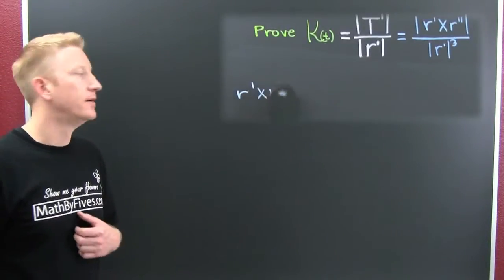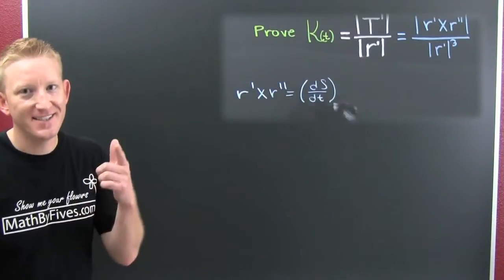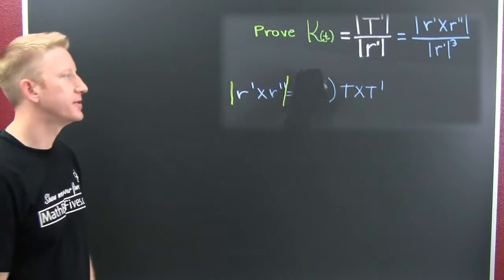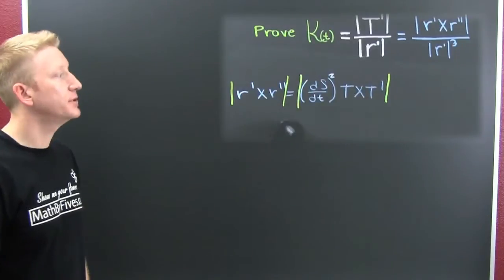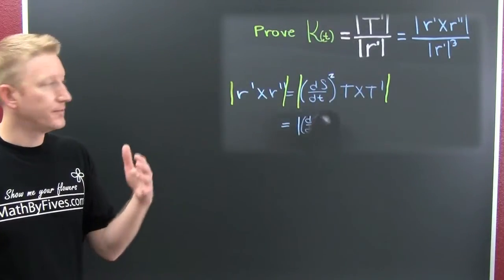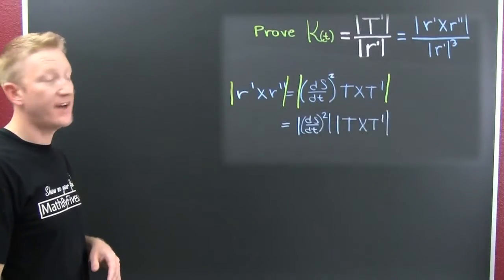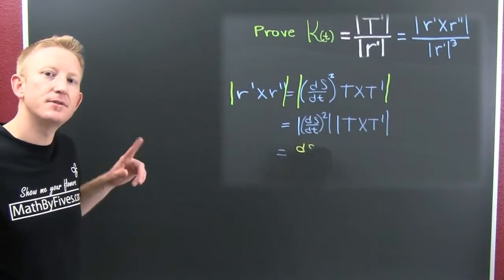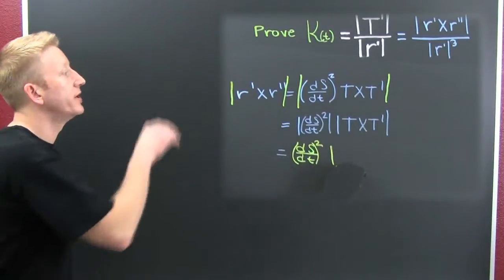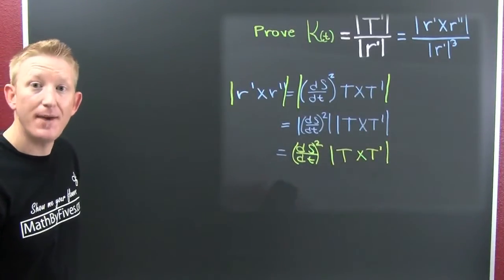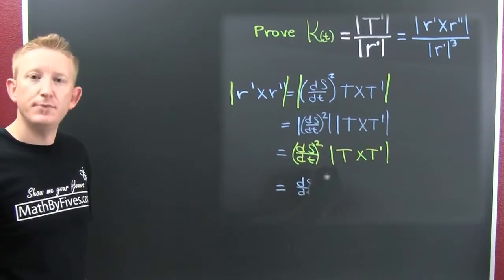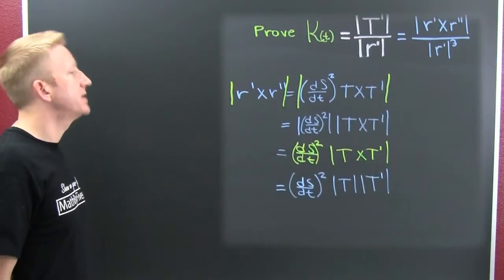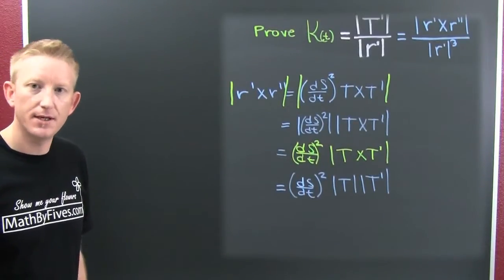Now let's take the magnitude of both sides. On the right, we have a product, and the magnitude of a product is the product of the magnitudes. So (ds/dt) squared passes outside — and since it's squared, we need not worry about the absolute value. We're left with (ds/dt)² times the magnitude of T cross T prime. The magnitude of T cross T prime equals the magnitude of T times the magnitude of T prime times the sine of the angle between them.